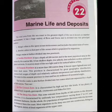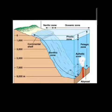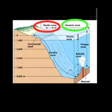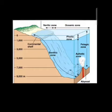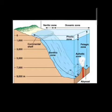The pelagic zone is further classified into two areas: the neritic zone and the oceanic zone. The neritic zone lies in the continental shelf area and is the most populated zone because more sunlight reaches this area, leading to the growth of many marine animals and plants.